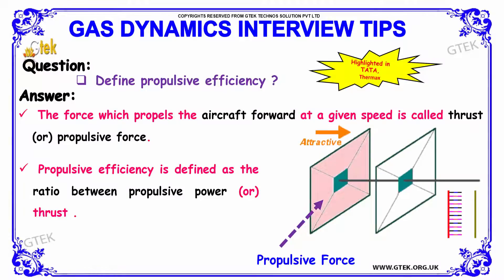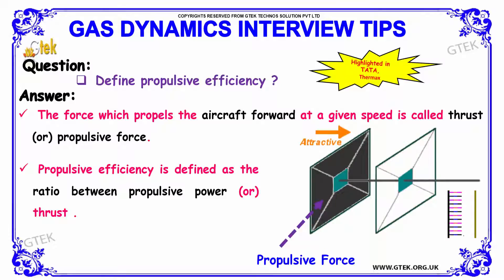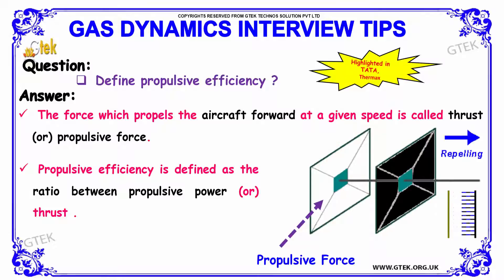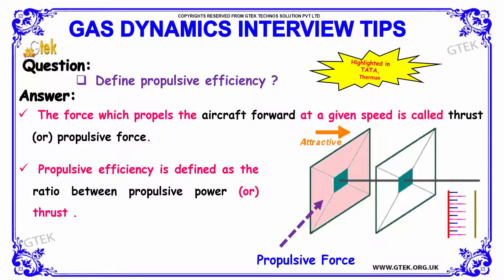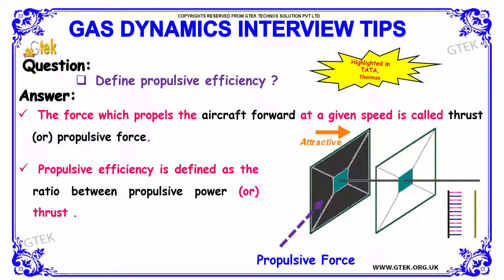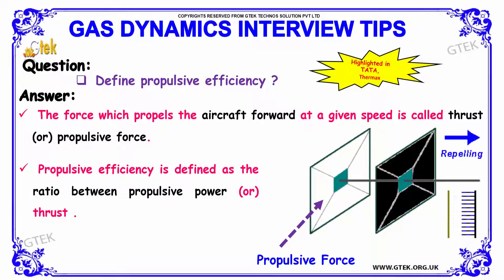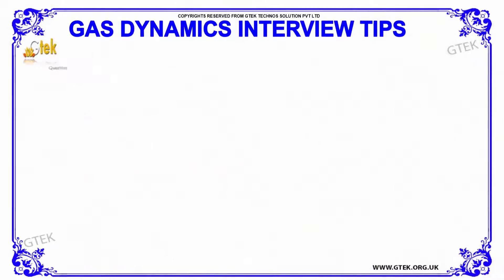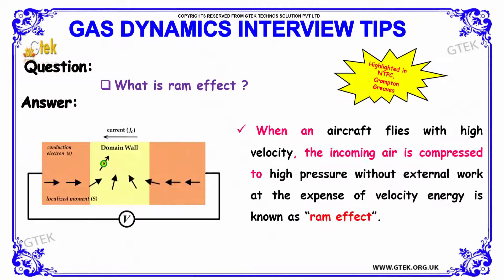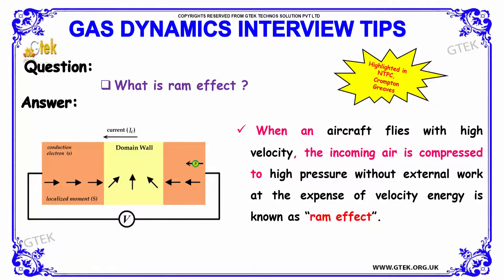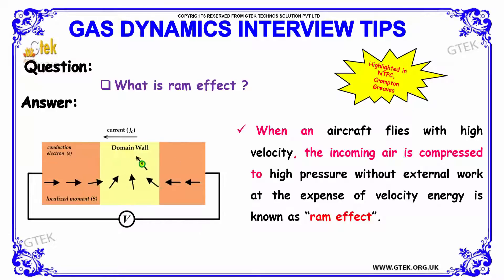Next question: define propulsive efficiency. The force which propels the aircraft forward at a given speed is called the thrust force or propulsive force. Propulsive efficiency is defined as the ratio of propulsive power, or thrust power, to the input power. Also, what is the Ram effect? When an aircraft flies with high velocity, the incoming air is compressed to high pressure without any external work at the expense of velocity energy — this is called the Ram effect.